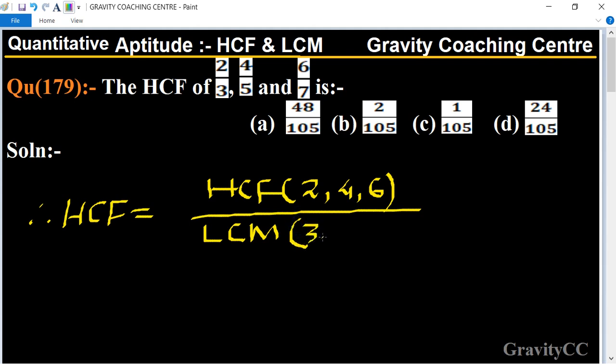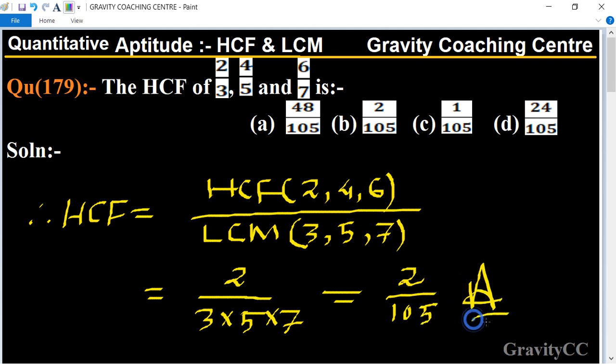3 comma 5 comma 7. So here HCF of 2, 4, 6 is 2 and LCM is 3 into 5 into 7. So equal to 2 upon HCF of 15, 15, 7, 0, 1, 0, 5. So 2 upon 105 which is the required answer.